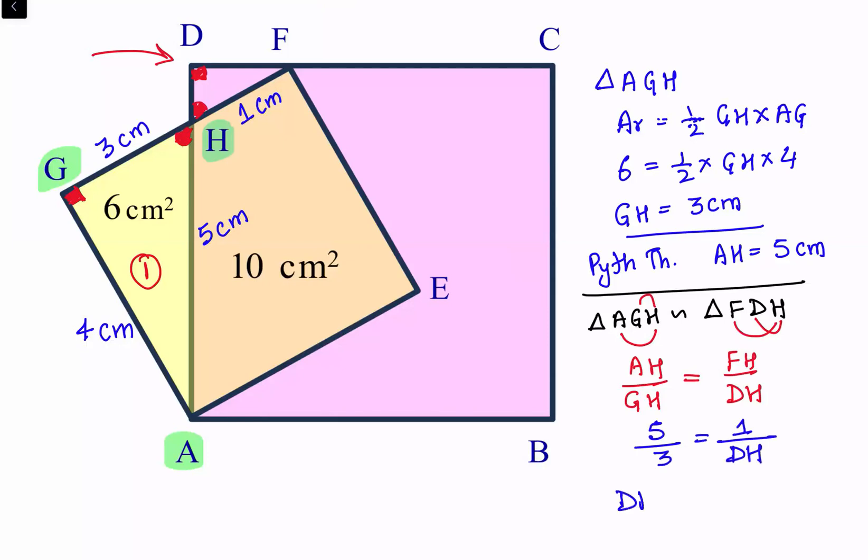Solving it, DH is 3 upon 5. So we are getting the value of DH as 3 by 5 centimeter.